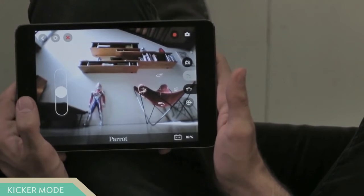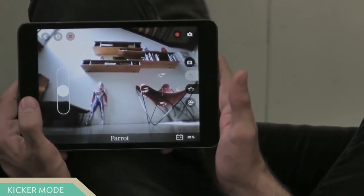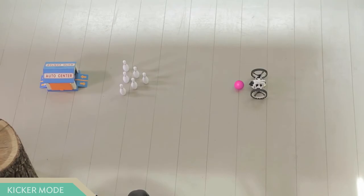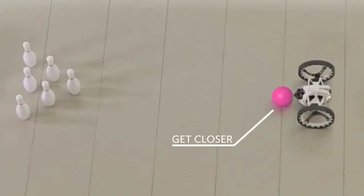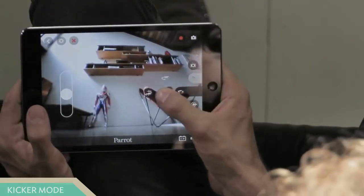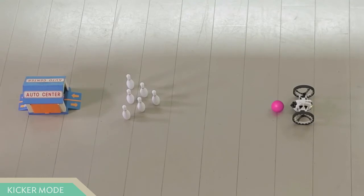The kicker remote allows Jumping Sumo to kick objects and obstacles. To kick objects, set the Jumping Sumo backwards in front of the object and pre-charge the long jump like this. Then, tap again the long jump icon to shoot.